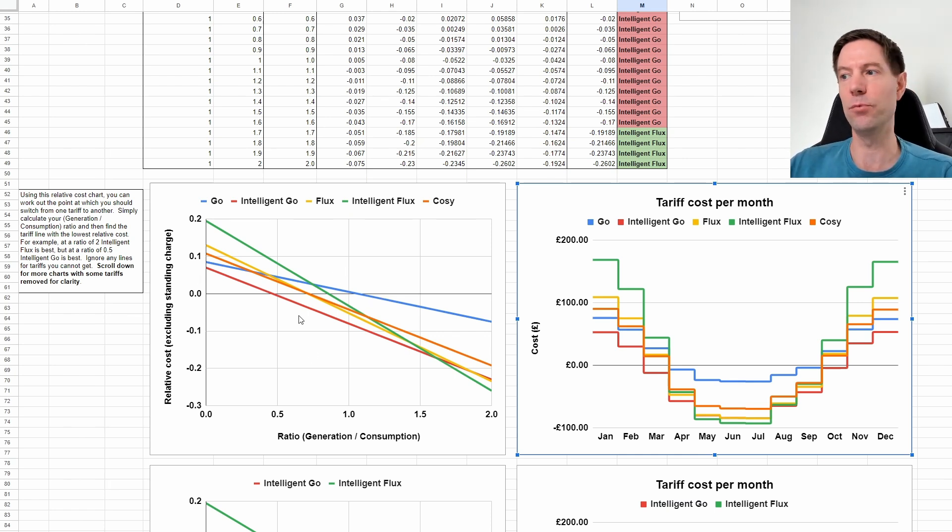So for us in January we're using a lot of heating and we've got very little generation so our ratio between generation and consumption is extremely low, which means that we're down in this sort of region of the chart here, which means that Intelligent Go is the best tariff for us with the lowest relative cost. In fact, the lowest absolute cost in this case because I've now converted it into actual pounds. As opposed to this one which is relative cost which doesn't really have a pound value, it just tells you what's the best relative to the others. Whereas this one has actual pound values. And you can see that in February, in March, in April it's still the best tariff, but in May, June and July Intelligent Flux becomes the best tariff. And then in August, then in September, October, November and December Intelligent Go once again becomes the best tariff.